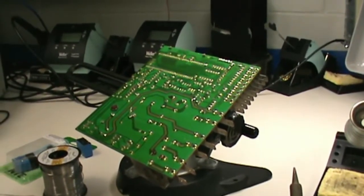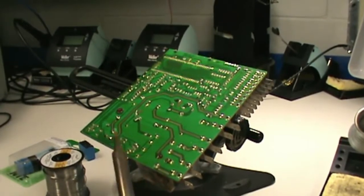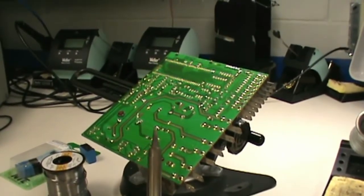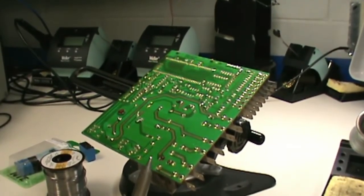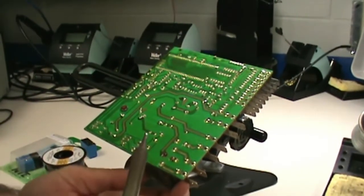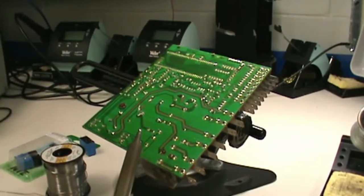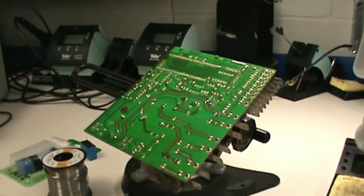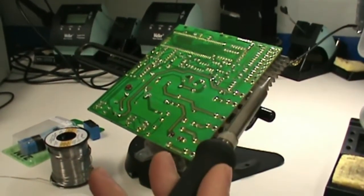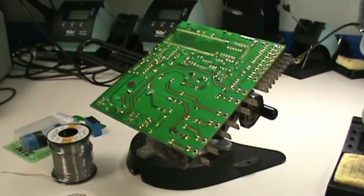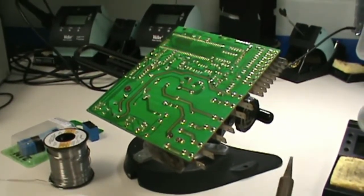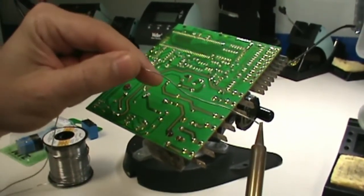So here's the relay desoldering process. One thing I can strongly recommend is don't try to heat these things up with your iron and rock the relay and try to pull it off the board. You're going to destroy the circuit board. So first off set up your soldering iron to approximately 700 degrees. Clean the tip and we're going to put a little bit of solder on the tip to wet it.